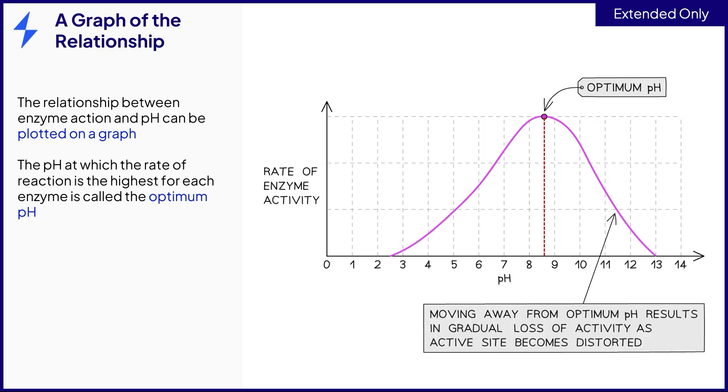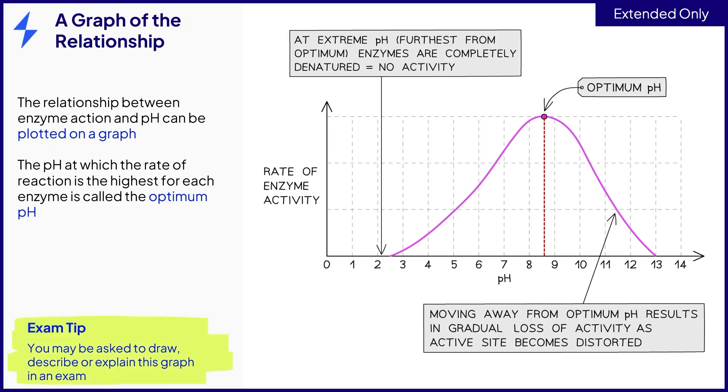Above or below the optimum, the rate of enzyme activity decreases because the active sites of some of the enzymes are changing shape in the acidic and alkaline conditions. At extreme pH conditions above and below the optimum, the active sites of all the enzymes become denatured and the enzyme activity stops. Make sure you're familiar with this graph because you may be asked to draw, describe or explain it.